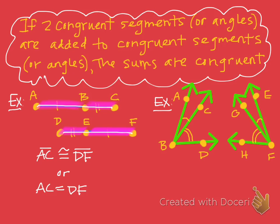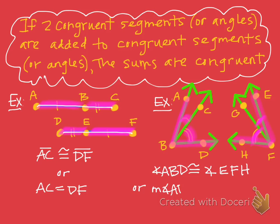Looking at this theorem as it relates to angles, from the picture we can see that angle ABC is congruent to angle EFG, and angle CBD is congruent to angle GFH. We have our two sets of congruent angles. If I add ABC to CBD, I get angle ABD. If I add angle EFG to GFH, I get angle EFH. We can now say those two angles are also congruent: angle ABD is congruent to angle EFH, or the measure of angle ABD equals the measure of angle EFH.